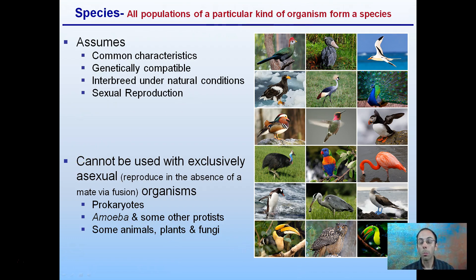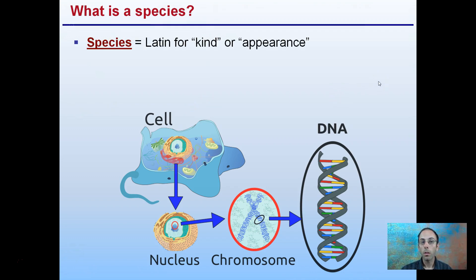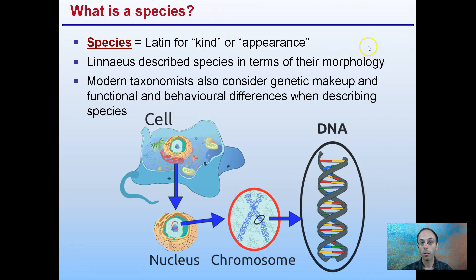Looking at different bird species, these all have common characteristics — they're genetically compatible and can interbreed under natural conditions via sexual reproduction. 'Species' is Latin for kind or appearance, and Linnaeus described species in terms of their morphology — that is, their shape or how they visually look. Modern taxonomists also consider genetic makeup, function, and behavioral differences when describing a species, allowing us to be more precise by examining DNA for commonalities.